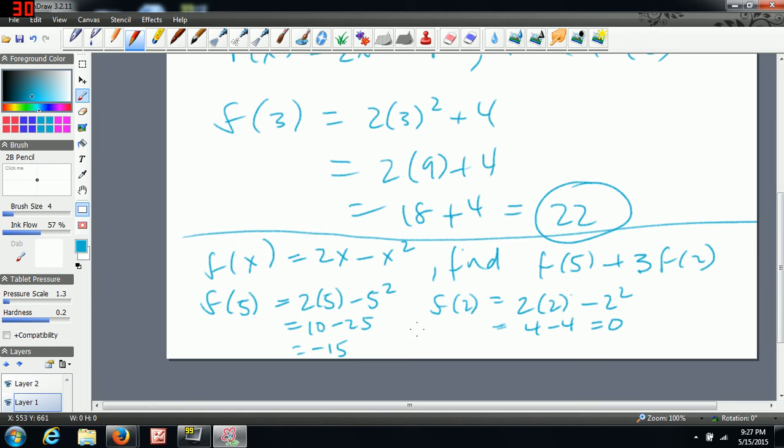And now I'm actually finding f of 5 plus 3 times f of 2, which is equal to negative 15 plus 3 times f of 2. So 3 times 0. So the answer is negative 15.